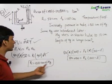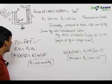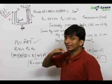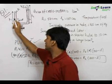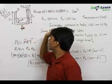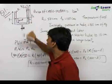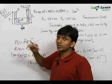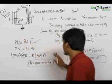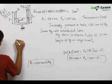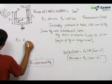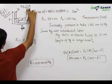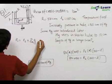We now have three variables — P1, P2, and L — so we need another equation. The third equation comes from the fact that in a liquid, pressure is always the same at the same horizontal level. Since this is a singly connected liquid, pressure at the same level must be equal. Therefore we can write: P1 equals P2 plus rho_mercury times g times (L minus 10).